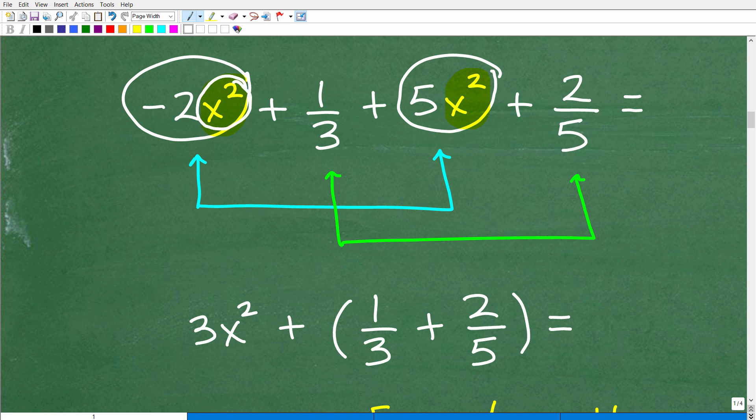They have to be 100% exactly the same. If they are exactly the same, we can combine them. In other words, we can take the numbers in front of those terms, we call those coefficients, and we can add them up.